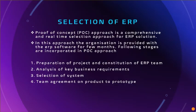Next is the selection of an ERP system. Selecting an appropriate ERP package involves careful evaluation of existing ERP alternatives and the needs or profile of the organization. There is what is called the POC, or Proof of Concept approach, which is a comprehensive and real-time selection approach for an ERP solution. In this approach, the organization is provided with ERP software for a few months as a trial, to test if the ERP system will fit their organization. There are four stages: first, preparation of the project and constitution of the ERP team; second, analysis of key business requirements; third, selection of the system; and fourth, team agreement on the product to prototype.